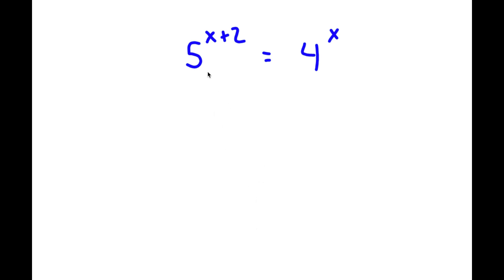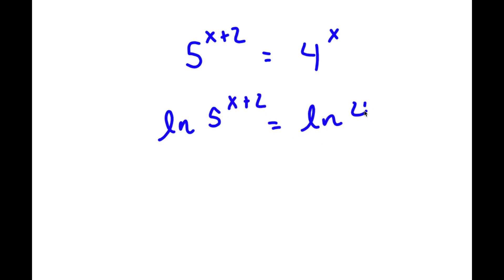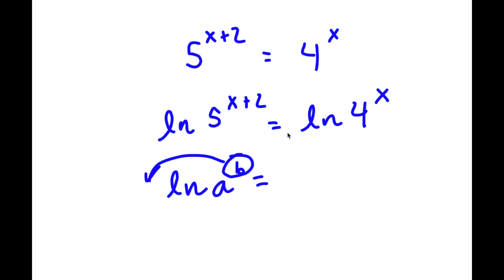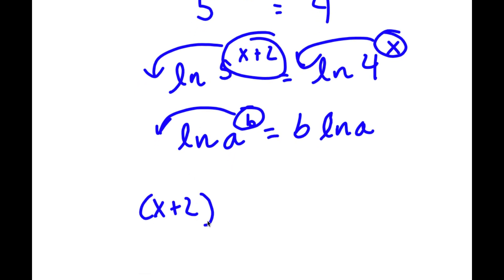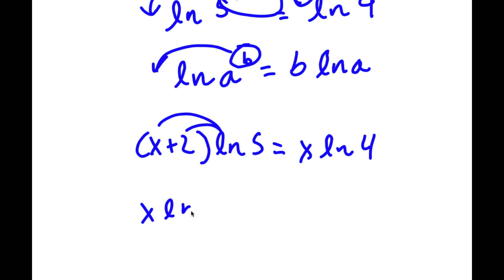Alright, so in this problem I have 5 to the power of x plus 2 is equal to 4 to the power of x. To solve this, I'm going to first take the natural log on both sides. So I have ln of 5 to the power of x plus 2 is equal to ln of 4 to the power of x. Now, if I have ln of a to the power of b, I can move the exponent b to the front, giving b times ln a. So, moving x plus 2 to the front and x to the front, I get x plus 2 times ln 5 is equal to x times ln 4. Distributing gives x times ln 5 plus 2 times ln 5 equals x times ln 4.